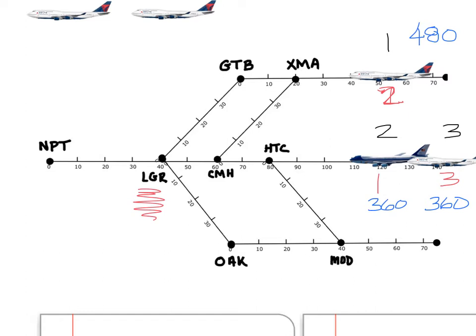Let's figure out the point at which we're going to have them lined up — it's going to be out in this area, beyond LGR. What point are we going to make the reference point? Is it LGR, is it NPT, is it CMH? If we use CMH as that point, then plane one would have to go over the top and come out in front of it — it would have to go to XMA and then to CMH.